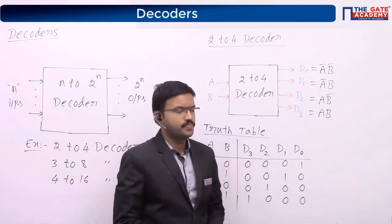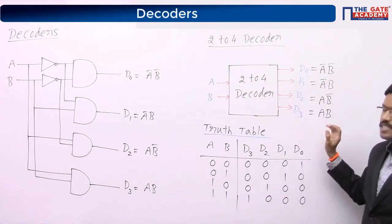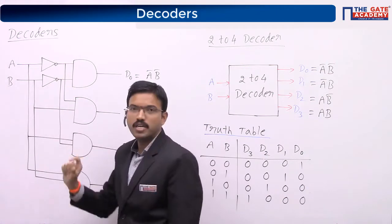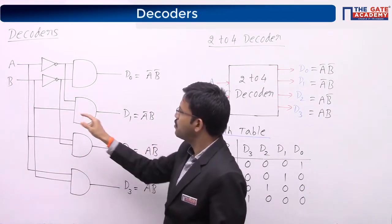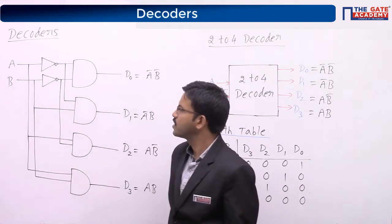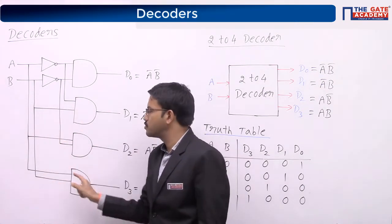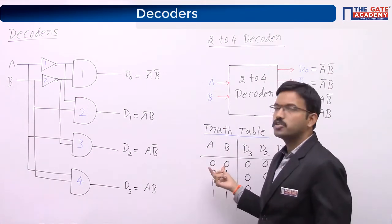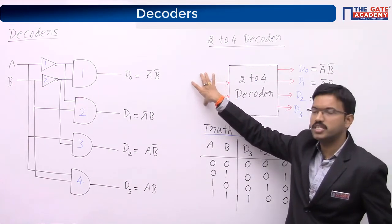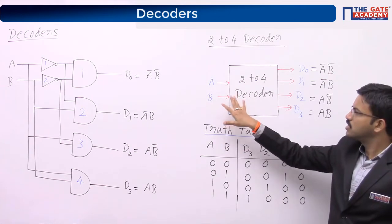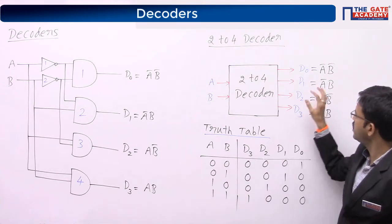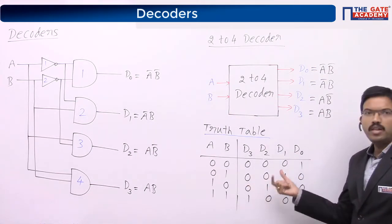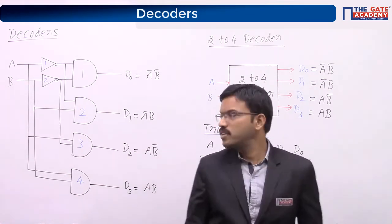Now derive the output expressions. D0 gets 1 when both A and B are 0, so D0 = Ā·B̄. D1 gets 1 when A=0 and B=1, so D1 = Ā·B. Similarly, D2 = A·B̄ and D3 = A·B. Now draw the circuit diagram — you require AND gates and inverters. D0 = Ā·B̄ requires two inverters and one AND gate. D1 = Ā·B, D2 = A·B̄, D3 = A·B each use one AND gate. Total: four AND gates and two inverters.